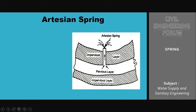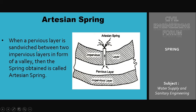We already discussed this figure. When a pervious layer is sandwiched between two impervious layers in the form of a valley, the spring obtained is called an artesian spring. This is the cross-sectional area of a valley where water gets pressurized due to the central V-shaped portion. Under this pressure, the water finds its way to move toward the surface of the earth, forming an artesian spring.